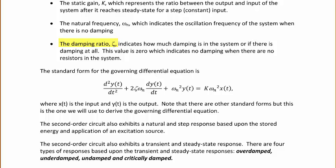The damping ratio is zero when there are no resistors in the system, which indicates no damping. That would represent a system that oscillates forever — for example, with a frequency input — where energy is exchanged back and forth between the inductor and capacitor for all time.